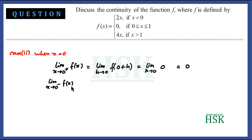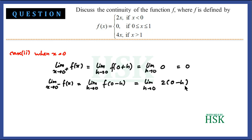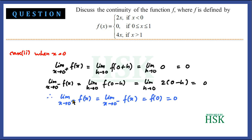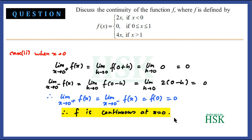The left-hand limit is the limit as h tends to 0 of f(0 − h), which equals the limit as h tends to 0 of 2(0 − h), since we substitute (0 − h) into 2x. On applying the limit this equals 0. So the right-hand limit equals the left-hand limit equals f(0) = 0. Therefore the function is continuous at x = 0.